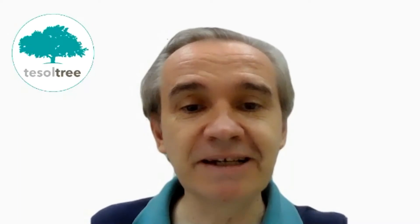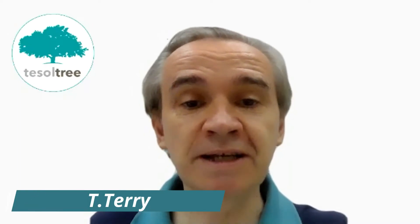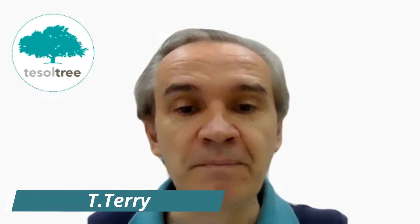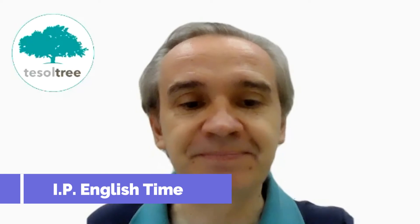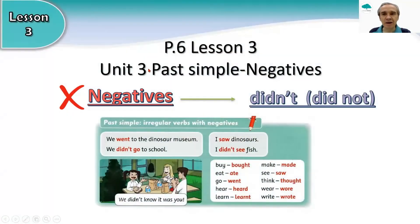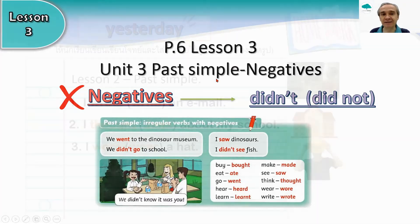Hello, I'm Teacher Terry and welcome to today's P6 IP English Time class. Today's class is lesson number three, Unit Three: Simple Negatives. We'll be looking at 'didn't' and 'did not'.